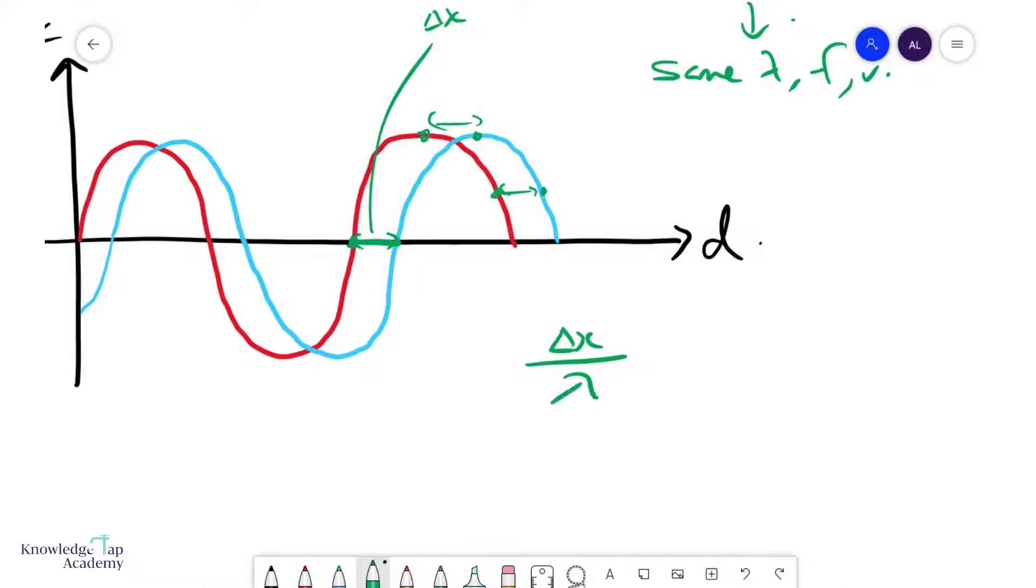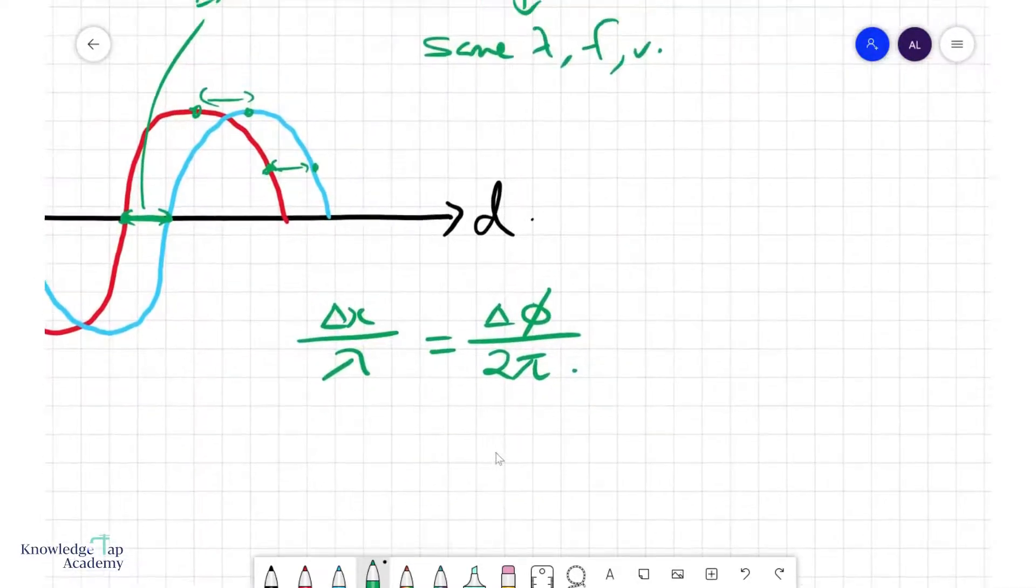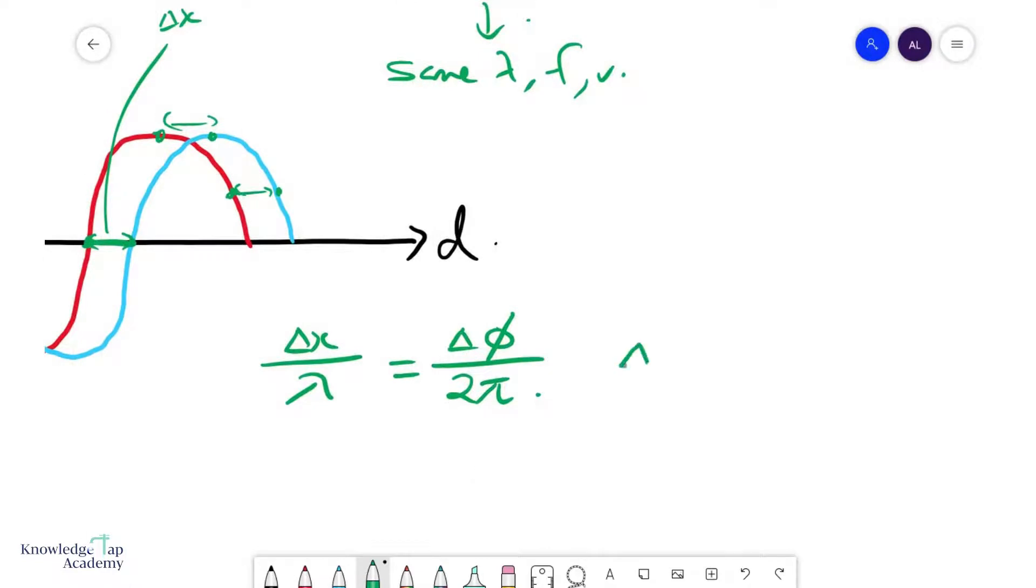wavelength of the wave, by ratio this must be the phase difference between the waves over 2π. So rearranging, we can find the phase difference, or the representation of the misalignment between these two waves, as Δx